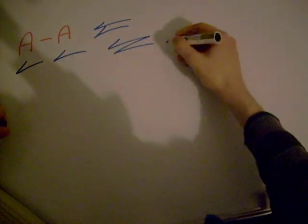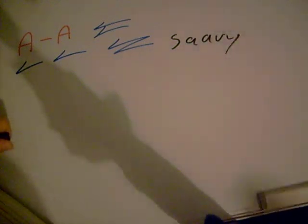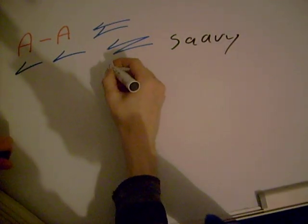So let's look at a word with that. For example, there's not a lot of words with AA, but there is savvy. So let's have a look here.